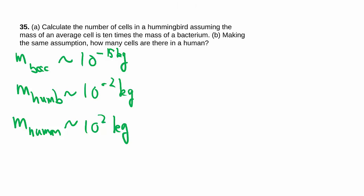First they say the average cell is about 10 times the mass of the bacterium, so M cell is going to be about 10 times M bacteria. So that's going to give us 10 to the 1 multiplied by 10 to the negative 15 kilograms.